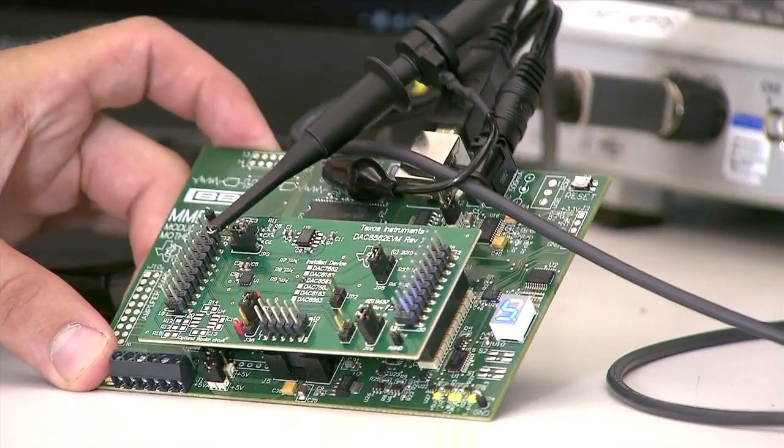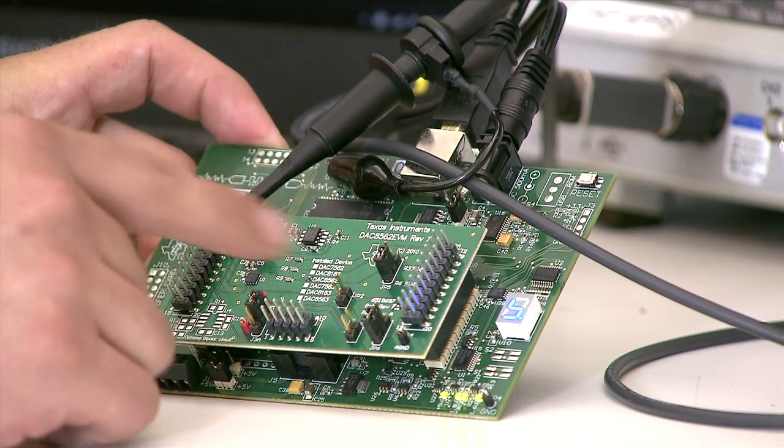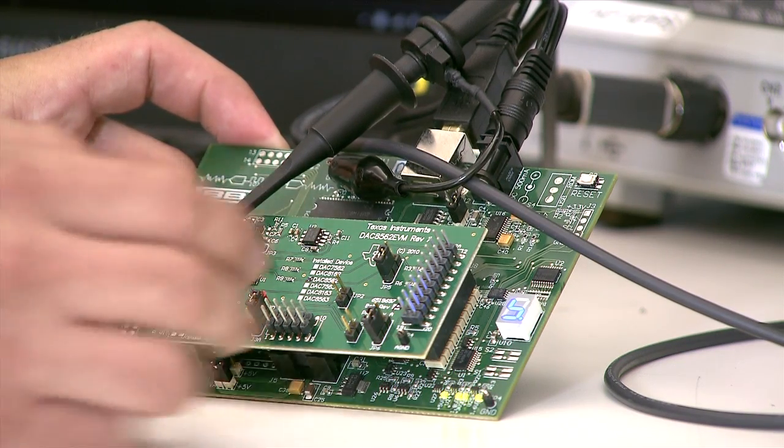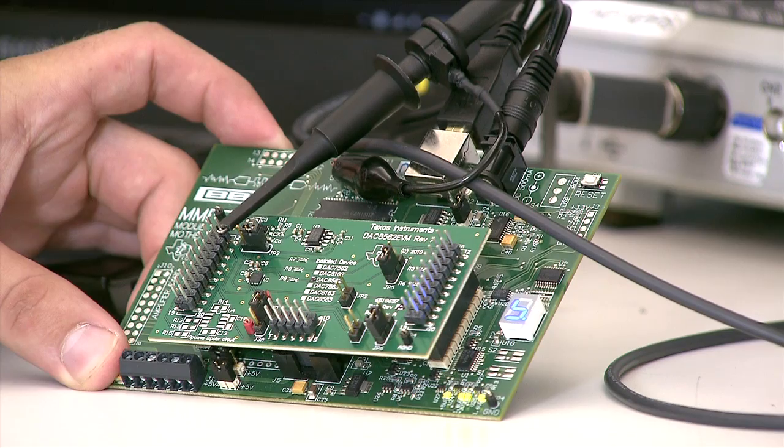Precision DAC evaluation hardware and software enable you to quickly and easily evaluate a TI Precision DAC in your system or for your specific needs. The evaluation hardware features jumpers that allow you to configure the hardware options, a header to probe the analog signals, and a header to probe the digital signals.